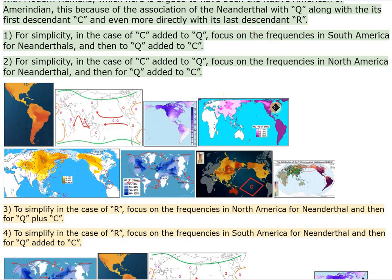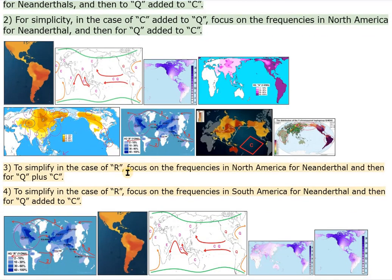For simplicity: in the case of C added to Q, focus on the frequencies in South America for Neanderthals, then to Q added to C. In the case of C added to Q, focus on frequencies in North America for Neanderthal, then for Q added to C. In the case of R, focus on the frequencies in South America for Neanderthal, then for Q added to C.